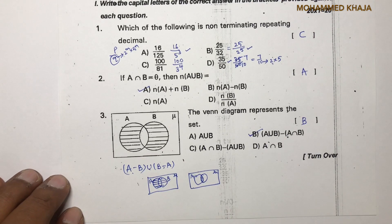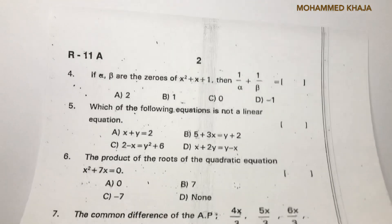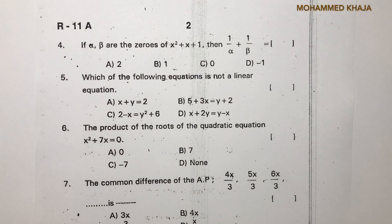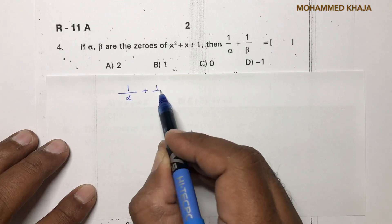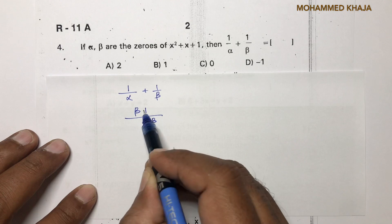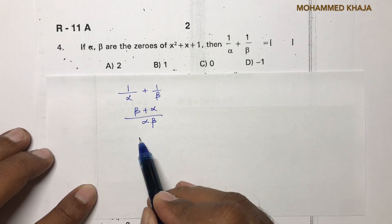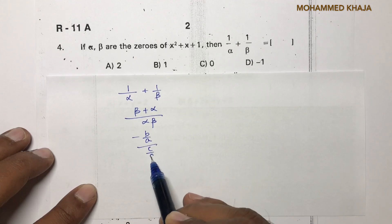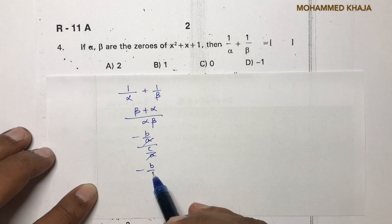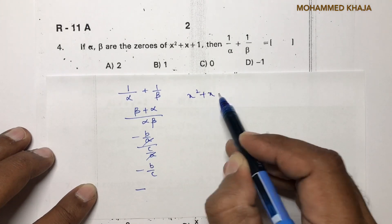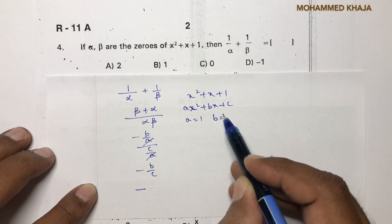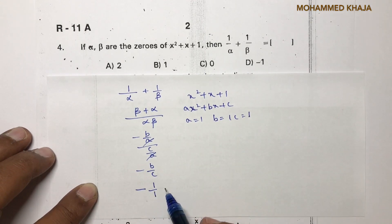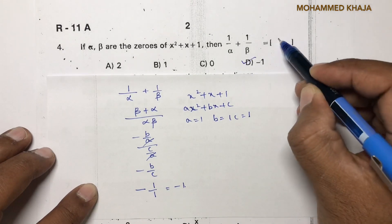Question 4: If α and β are zeros of the polynomial, find 1/α + 1/β. Taking LCM: (α + β)/(αβ). Sum of zeros = −b/a, product of zeros = c/a, so the result is −b/c. Comparing x² + x + 1 with ax² + bx + c: a = 1, b = 1, c = 1. So the answer is −1/1 = −1. Correct option is D.